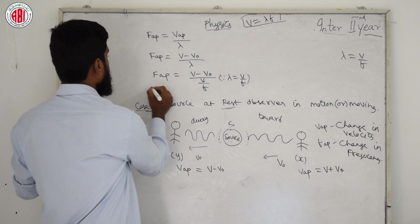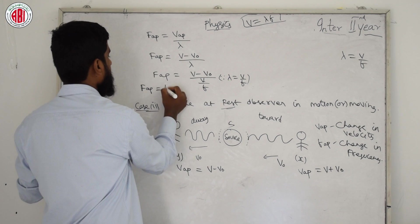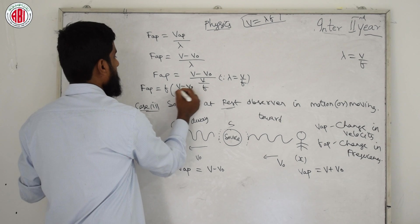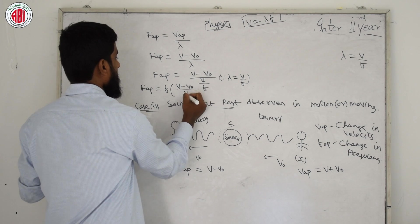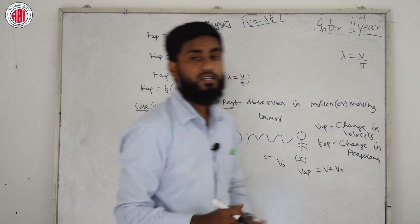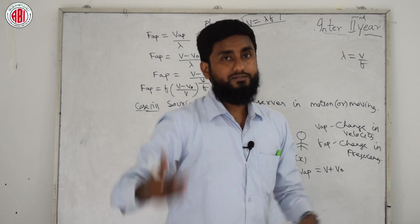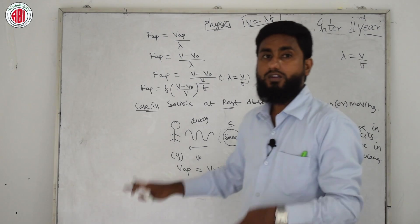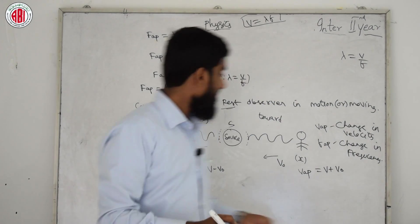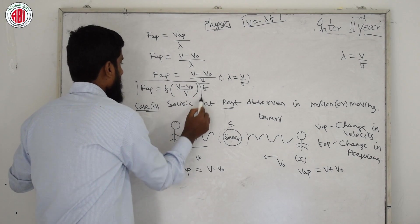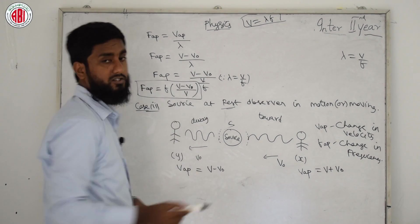For observer X (moving towards the source): f_ap = v_ap / λ = (v + v₀) / λ. Substituting λ = v/f again: f_ap = f × (v + v₀)/v. This is the apparent frequency for observer X at rest.